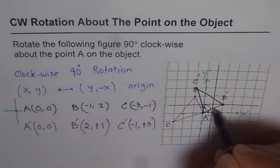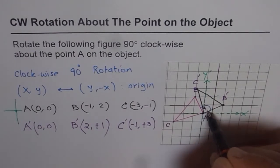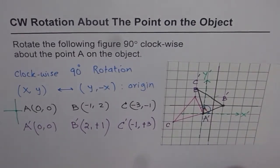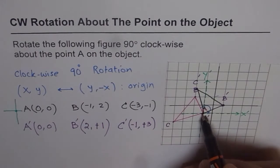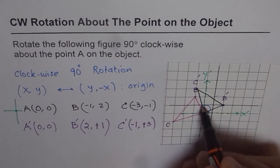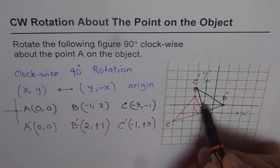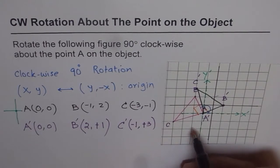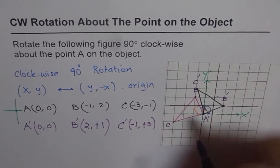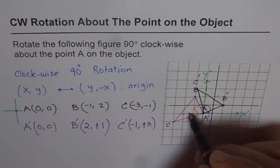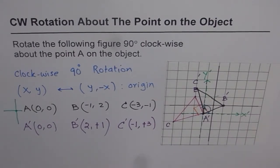AB has moved 90 degrees. Similarly, AC has moved to A'C', which is also 90 degrees. That is how our triangle has been rotated clockwise — all sides have moved 90 degrees clockwise. Let me now summarize the method.